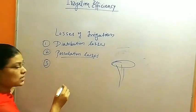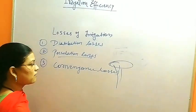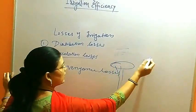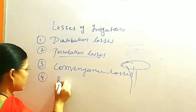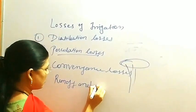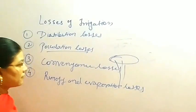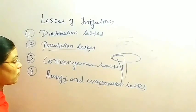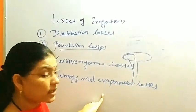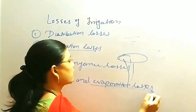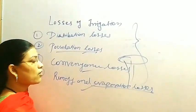The third one is conveyance losses — conveyance means the transfer of water from one place to another, from the main source directly to the field. Water can be lost due to conveyance. The fourth one is runoff and evaporation losses. After application of water to the field, water is lost with runoff on undulating land, and water is also lost in the form of vapor through evaporation losses.